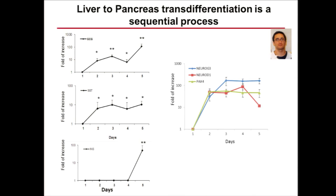Together with that, some endogenous transcription factors were robustly activated on the first day — NGN3, NeuroD, Pax4 — however, the transcription factors characterizing beta cells, MafA and Nkx6.1, were only gradually and modestly activated. To ask whether transdifferentiation is sequential, we used three transcription factors activating distinct stages of pancreas organogenesis: PDX1, Pax4, and MafA — which is more specific to the beta cell.